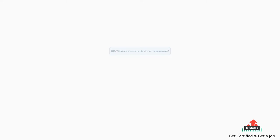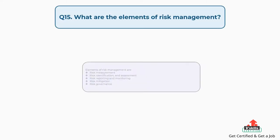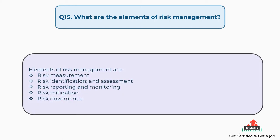Question number fifteen: what are the elements of risk management? Elements of risk management are: risk measurement, risk identification and assessment, risk reporting and monitoring, risk mitigation, and risk governance.